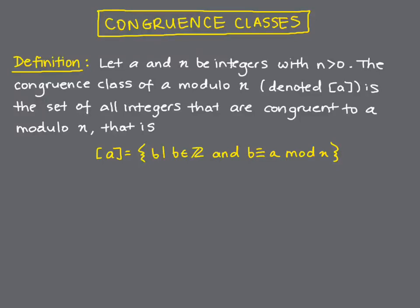In this video, we define the congruence class of an integer modulo some other integer n. The congruence class of a modulo n is the set of all integers that are congruent to a modulo n. So this means we take the set of all b, such that b is an integer, so that b is congruent to a mod n. Let's look at some examples to make sure this definition makes sense.